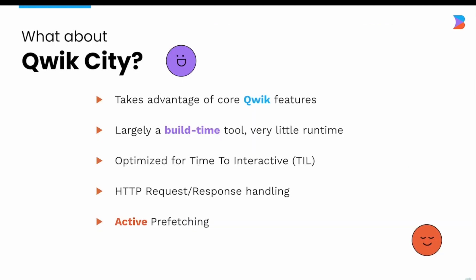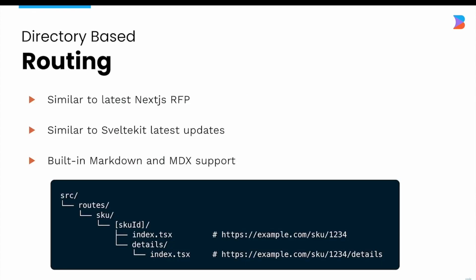Quick City is the meta framework built on top of Quick. All of Quick's benefits — resumability and extremely fast time to interactive — are also true for Quick City applications. Because it's leveraging Quick's core feature, there's actually very little runtime involved at all with Quick City. It comes with many of the expected features of a meta framework.